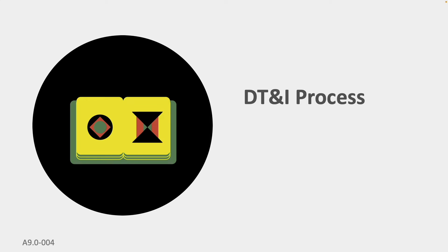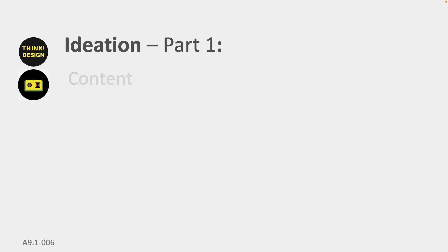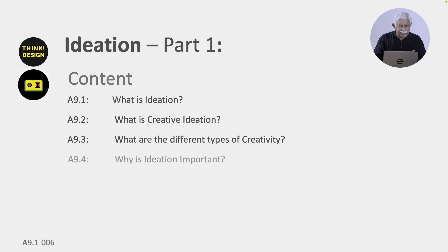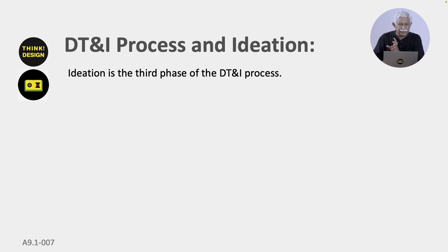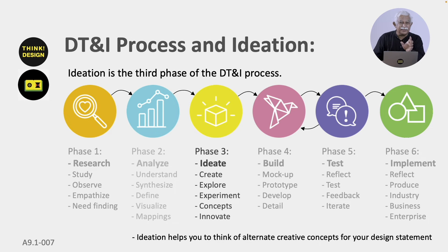Let us look at the design process with respect to ideation — this is part 1. The contents start with asking: what is ideation, what is creative ideation, what are the different types of creativity, and why is it important? Ideation is the third phase of the design thinking and innovation process. Research was the first phase, analysis was the second phase, and ideation is the third phase, where you will apply your creativity, explore alternatives, experiment with concepts, and be innovative.